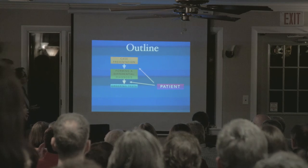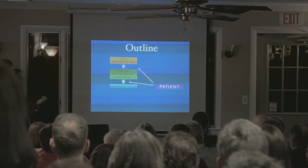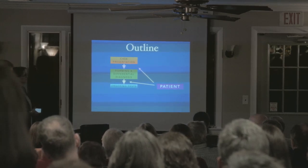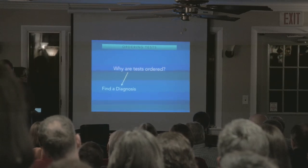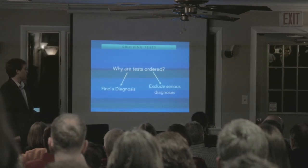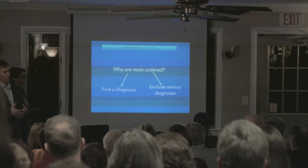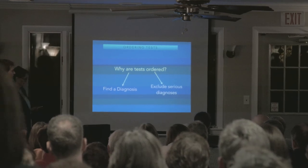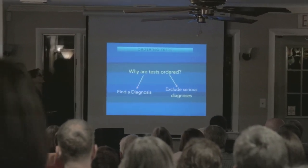Moving along — now we've got this differential, but there are a lot of possibilities. Someone with chest pain can have ten things on their differential, so we need to order tests to narrow it down. In the emergency department, one reason to order a test is to find a diagnosis, but a lot of the time what we're really doing is excluding diagnoses. I want to make sure you don't go home and have a heart attack, or a rupture of the aorta. If I send you home and I've ruled out all the bad stuff, I'm happy.